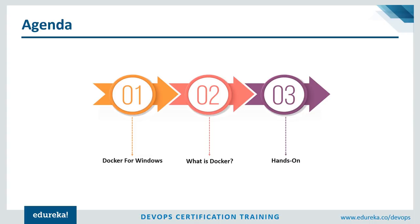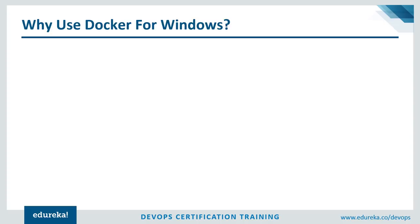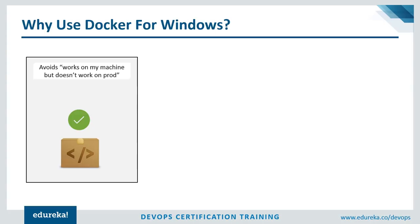I hope all of you are clear with the agenda. Let's get started with our first topic. So why should we use Docker for Windows? The first reason is that it avoids the 'works on my machine but doesn't work on production' problem. This problem occurs due to the inconsistent environment throughout the software development workflow.